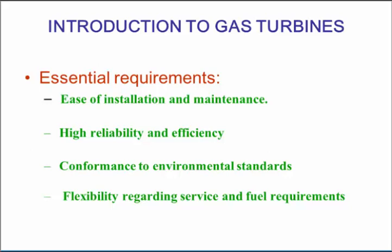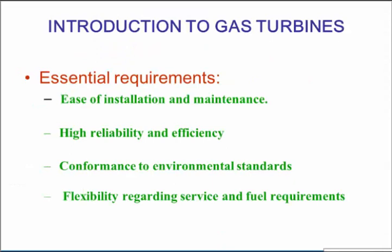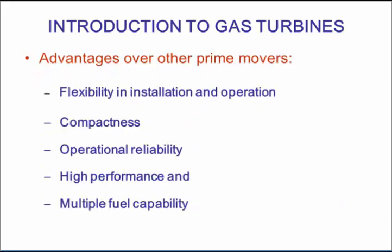We can use just about any fuel in a gas turbine, provided we know what the fuel is going to be and we adjust the engine to suit. Anything that can be measured can be used in a gas turbine — if we could measure coal dust, we could use coal dust. We can't measure it, so we don't. Normally a gas turbine runs on some sort of liquid fuel or gas, such as natural gas.